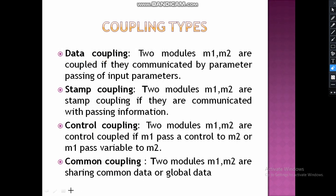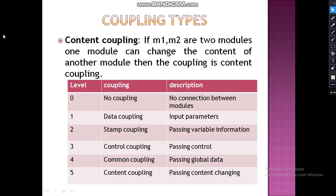Content coupling: if M1 and M2 are two modules and one module can change the content of the other module, then the coupling is content coupling. Content coupling means one module changes content that affects the other module.